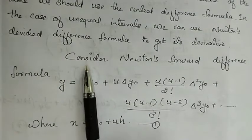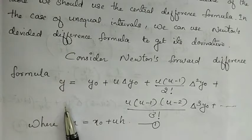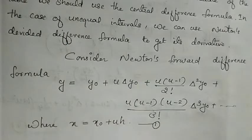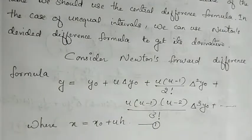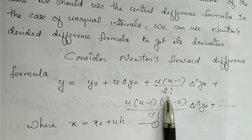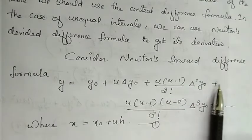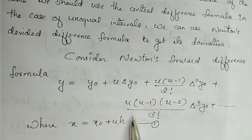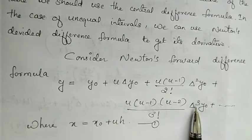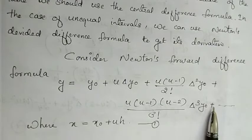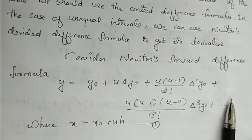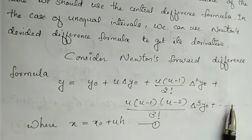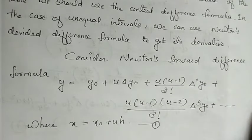In the case of Newton's forward difference formula, dy/dx is expressed as: y₀ + u·Δy₀ + u(u−1)/2! · Δ²y₀ + u(u−1)(u−2)/3! · Δ³y₀ + u(u−1)(u−2)(u−3)/4! · Δ⁴y₀ + ..., where x = x₀ + u·h.